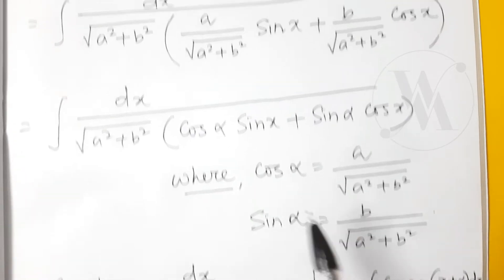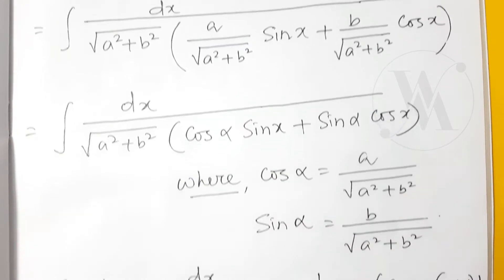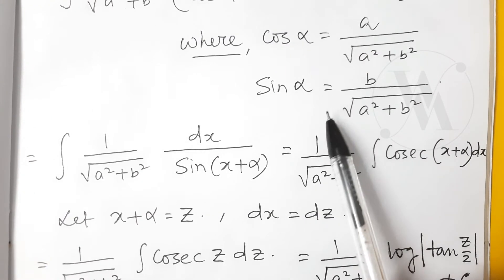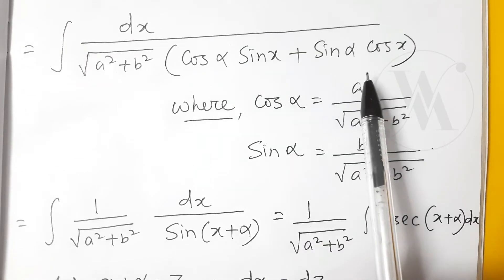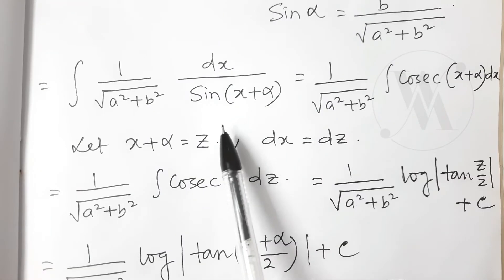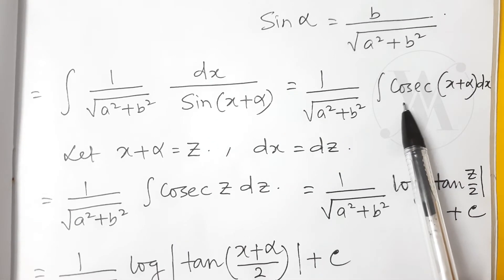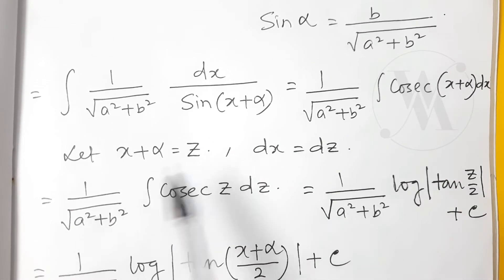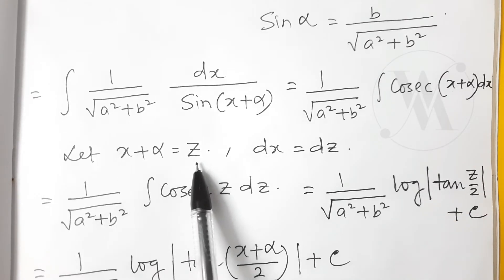Now this is nothing but the formula of sine x plus alpha. So we are just substituting it. Now 1 by sine is cosec, so we are writing it. Now x plus alpha we will substitute by z, so dx equal to dz.